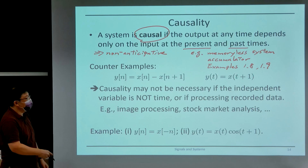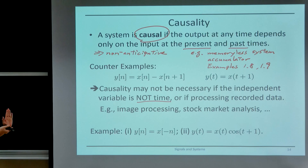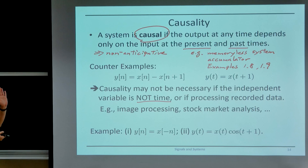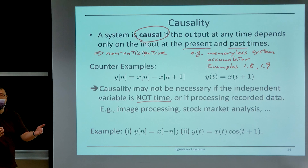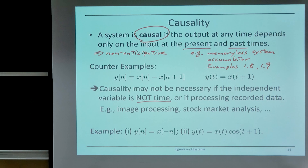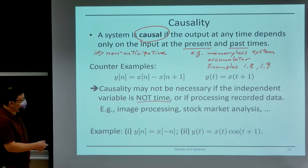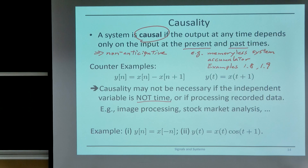An example of this is image processing. Your image is typically a signal with respect to the spatial variable. Causality also does not need to hold if you're performing post-processing on a time domain signal — even though the signal is with respect to time, if you have recorded it and then processed it later, you also do not need to be causal.